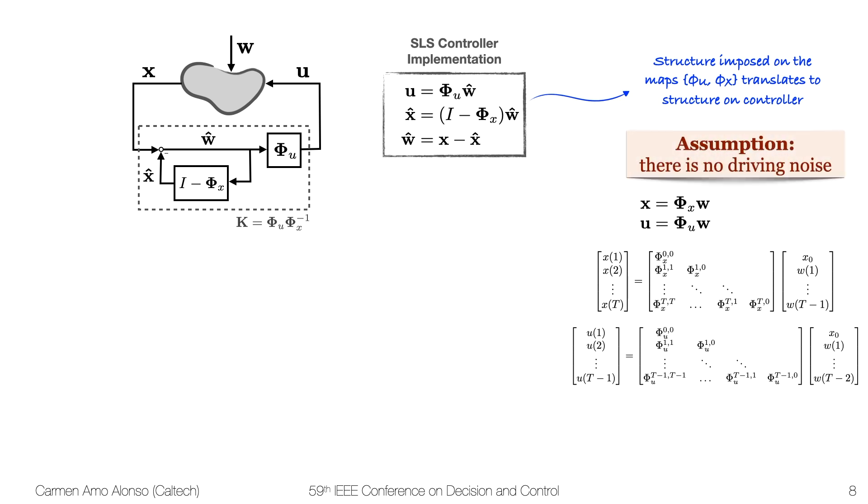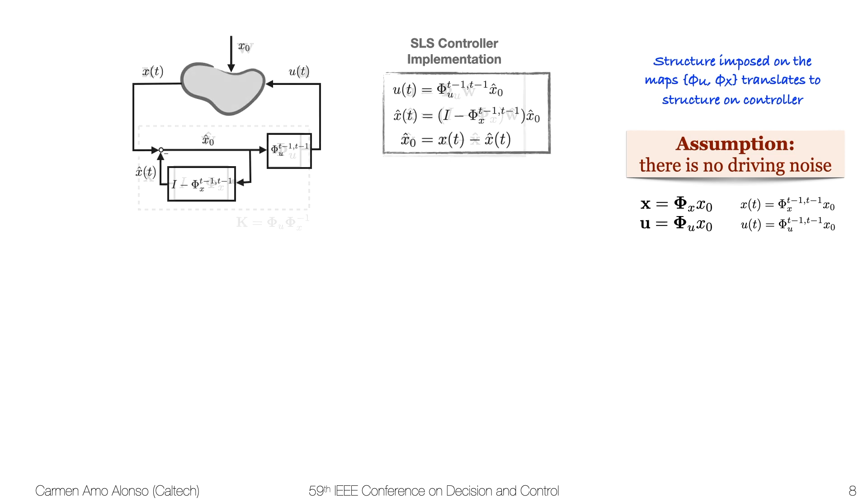Now, if we introduce the assumption that no driving noise is present, this computation simplifies from a convolution to a matrix multiplication. So this is what the implementation becomes for a given time step.